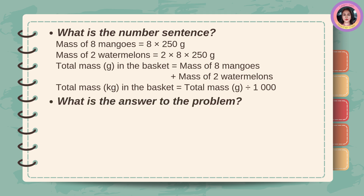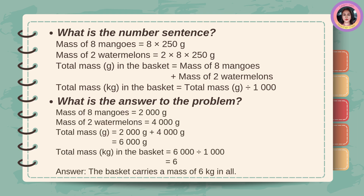Answer: Mass of 8 mangoes equals 2,000 grams. Mass of 2 watermelons equals 4,000 grams. Total mass in grams equals 2,000 plus 4,000 equals 6,000 grams. Total mass in kilograms equals 6,000 divided by 1,000 equals 6. The basket carries a mass of 6 kilograms in all.